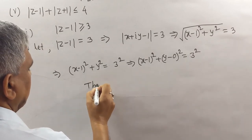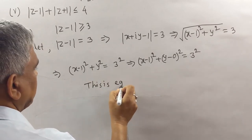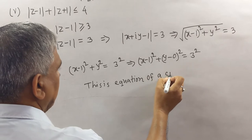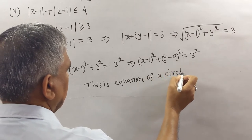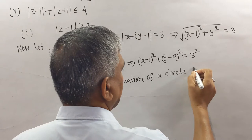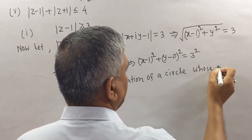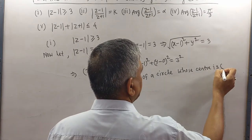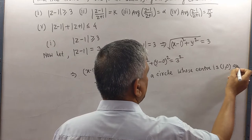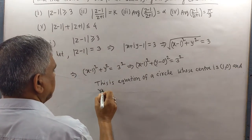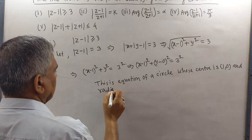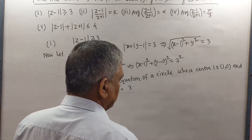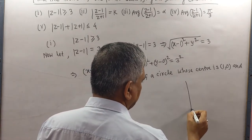This is the equation of a circle whose center is (1, 0) and radius equal to 3. Let us draw the figure here.